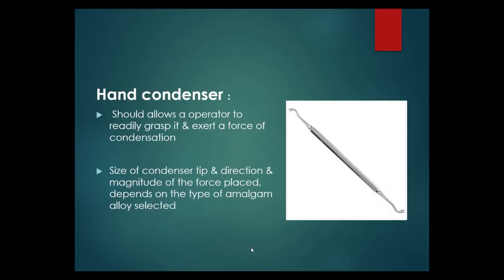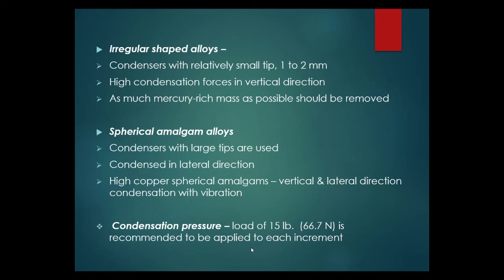Hand condensers should allow the operator to readily grasp and exert a force of condensation. The size of the condenser tip and direction and magnitude of force depend on the alloy type. For irregular-shaped alloys, a condenser with a relatively small tip of 1–2 mm is used with high condensation forces in the vertical direction. As much mercury-rich mass as possible should be removed.